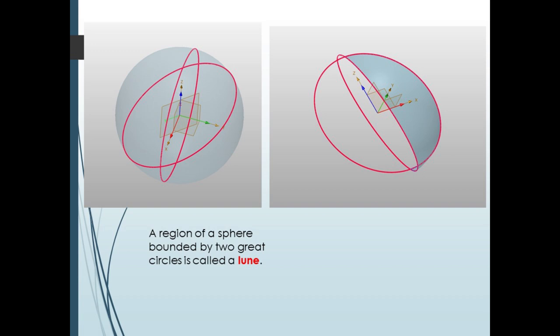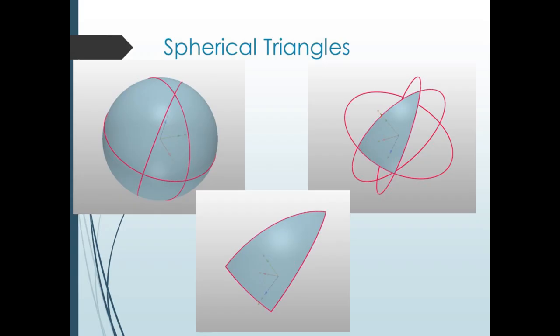In spherical trig, we have no parallel lines. All non-coincident great circles will intersect in two diametrically opposite or antipodal points on the sphere. A portion of a sphere bounded by two great circles is called a lune — the same name astronomers use to refer to the lighted portion of the moon visible from the earth. A portion of a sphere bounded by three great circles is called a spherical triangle.